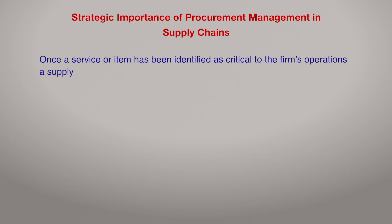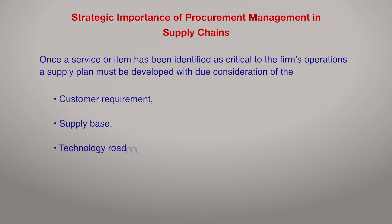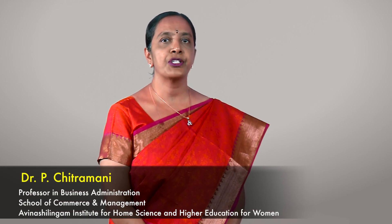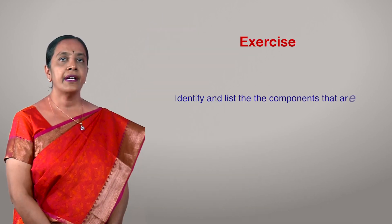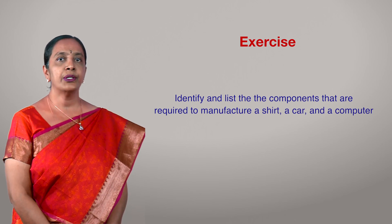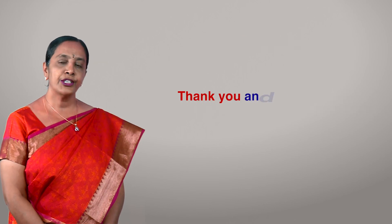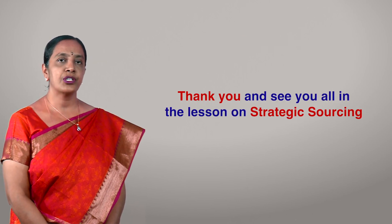Once a service or item has been identified as critical to the firm's operations, a supply process must be developed with due consideration of customer requirements, supply base, and technology roadmap. As a reflection activity on strategic sourcing, identify and list the components required to manufacture a shirt, a car, or a computer. Thank you and see you in the next lesson on strategic sourcing.